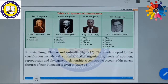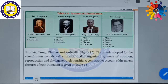Two kingdom classification was proposed by Carl Linnaeus in the year 1735. He classified living organisms into two groups, namely Plantae and Animalia. Then, Copeland in the year 1835 proposed three kingdom classification. He classified all living organisms into three categories, namely Protista, Plantae, and Animalia.